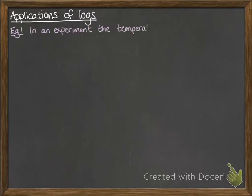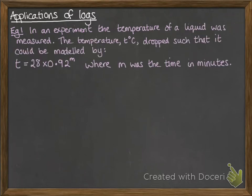An experiment is being done recording the temperature of a liquid that gets measured every minute. The temperature T degrees is falling such that it's modelled by this equation: T equals 28 times 0.92 to the M, which means it started at 28 degrees Celsius, and M is the time in minutes.